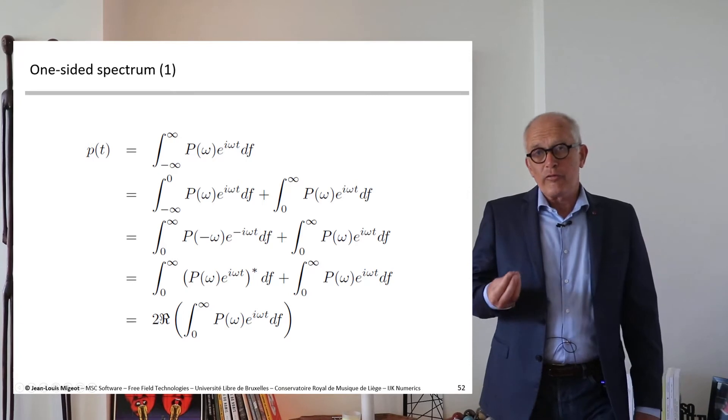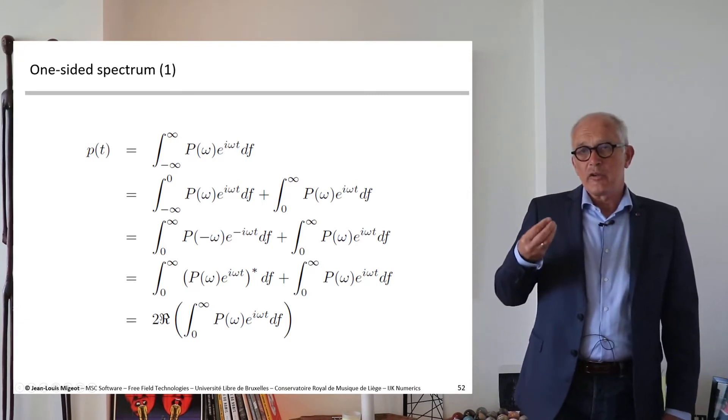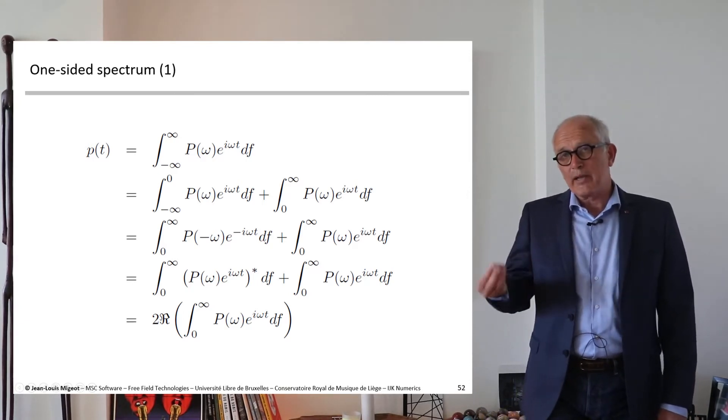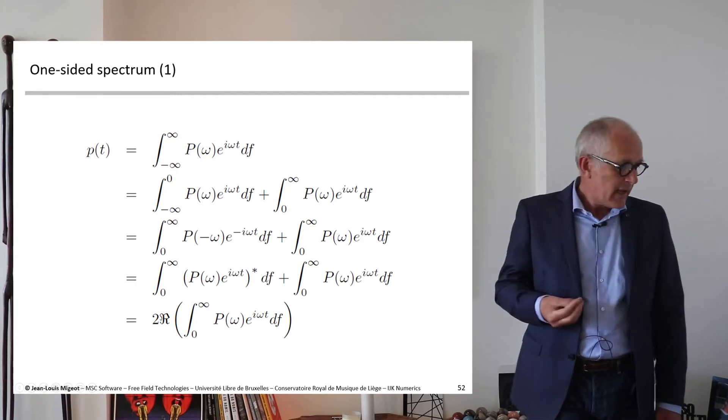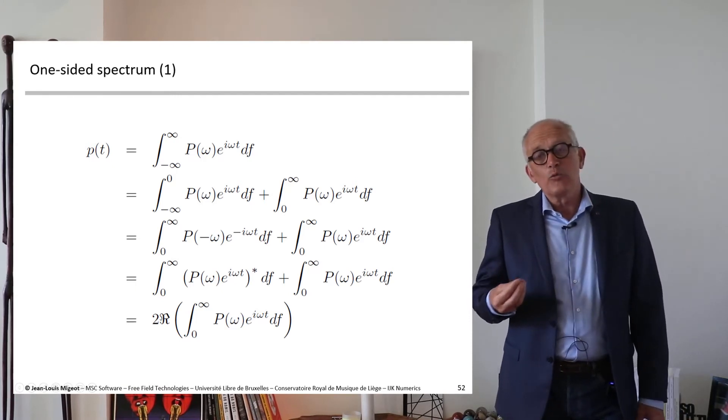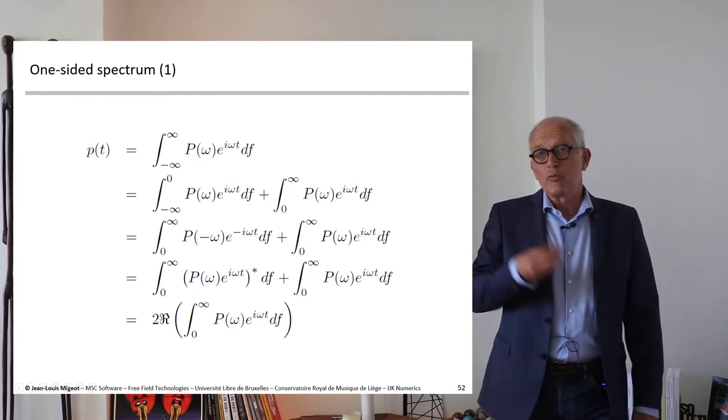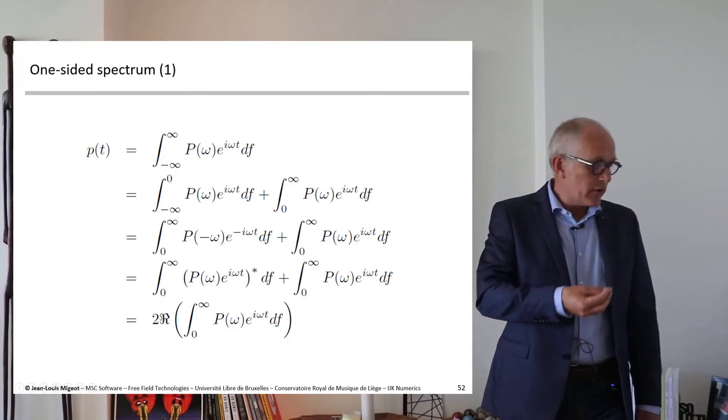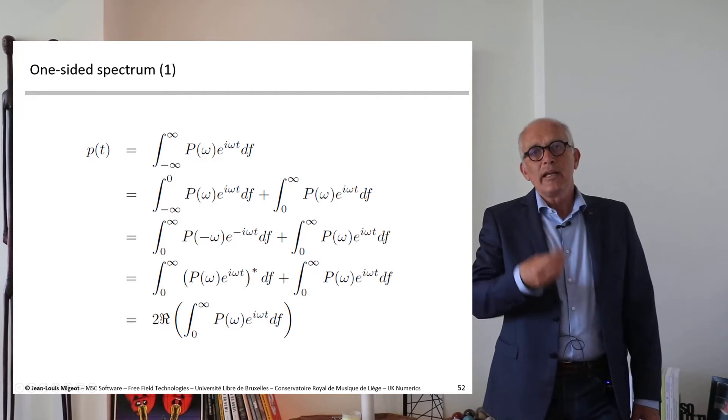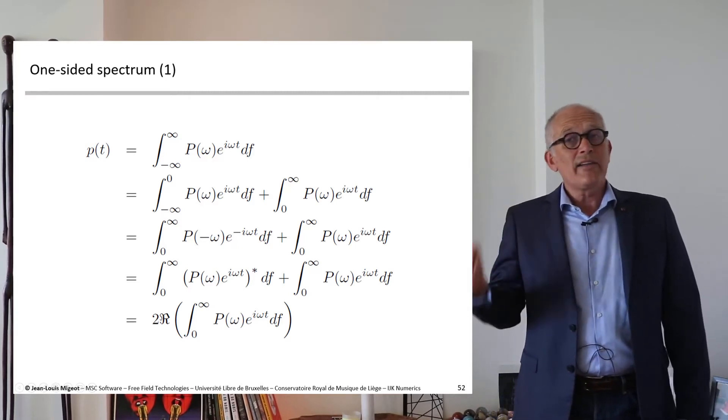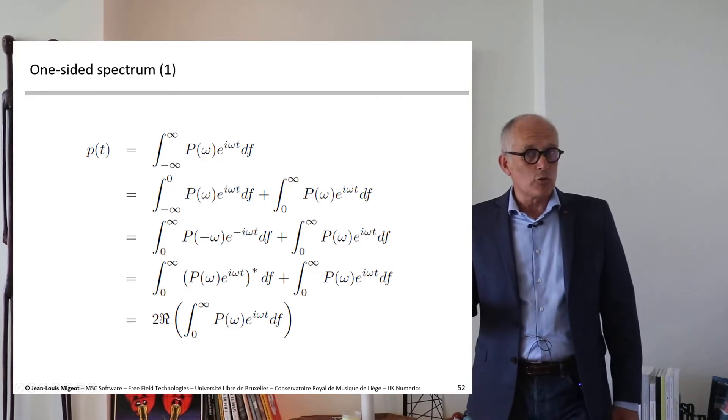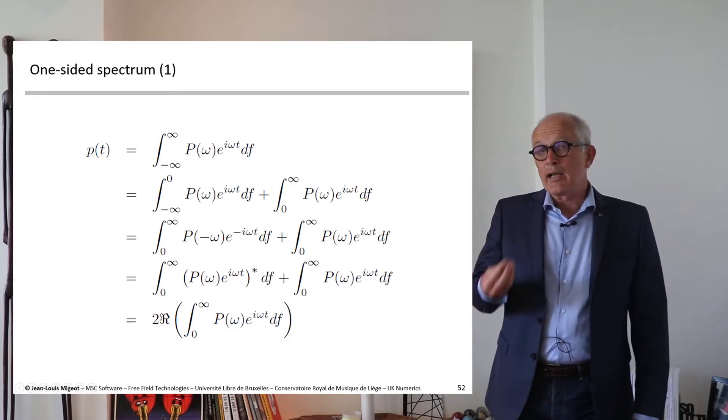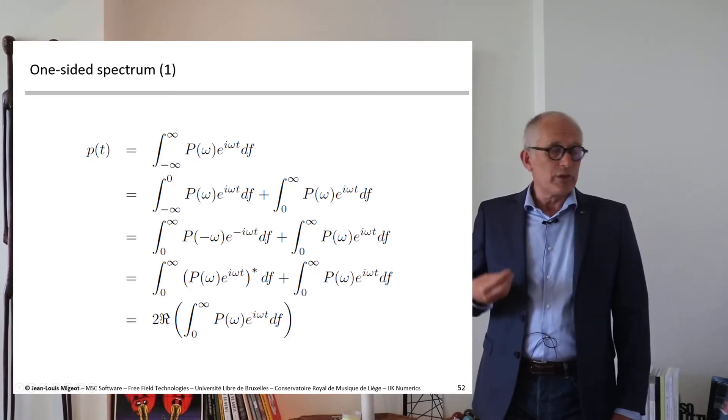I use the fact that the signal is real and the spectrum is Hermitian, and in the end I come to the sum of two integrals from zero to infinity, one with the integrand which is the classical integrand of the inverse Fourier transform, and the other one which is its complex conjugate.